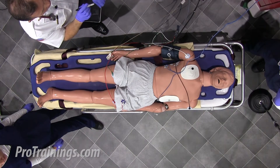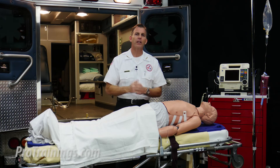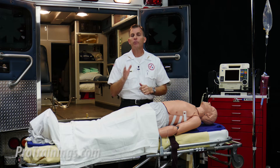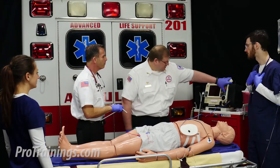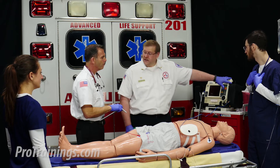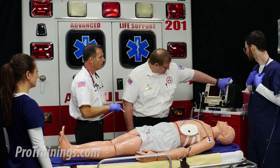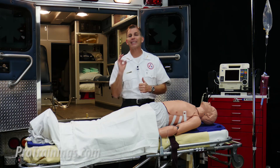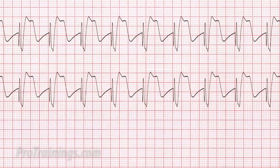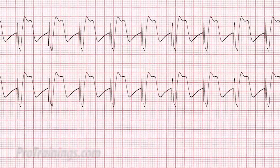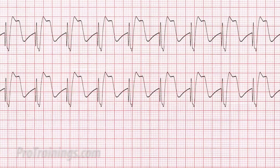We direct the assistant to apply the pacing pads and turn the pacer on. Protocols will dictate and vary from place to place. However, the American Heart Guidelines recommend that we start at 60 beats per minute. As the pacer is running, we turn up the milliamps until the heart muscle is captured. In our scenario, we have a consistent capture at 70 milliamps. We then turn the interval up 2 to 5 milliamps more to keep the capture.